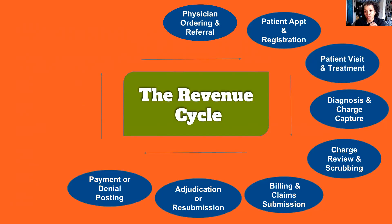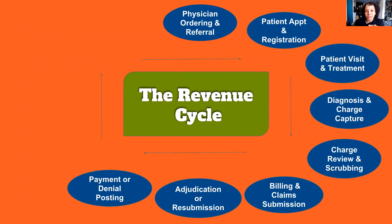Don't request an insurance company to submit a raw file to you if you can avoid it. A lot of clearinghouses these days are very robust in what they can do. You can even have a robust denial management system, which is helpful in the process. If you are dealing with a lot of claim denials, these clearinghouses can do a phenomenal job at organizing the data for you, telling you what your denial trends are, what types of denials they see most frequently, and how quickly you're resolving your denials.